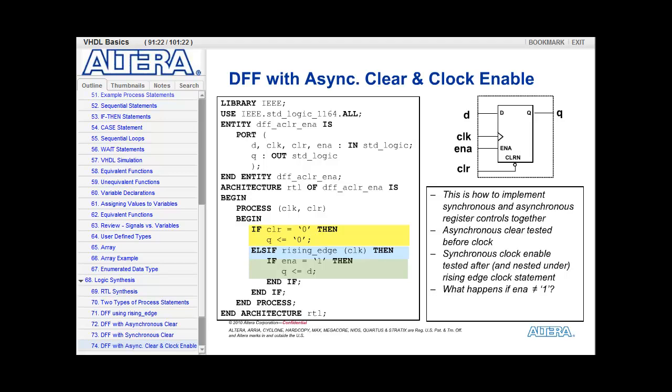So let's combine these two concepts together. Now we have a D flip-flop with an asynchronous clear and a clock enable. Since the clear again is asynchronous, it goes in the sensitivity list, and we check for it before the rising edge. Since the clock enable is a synchronous control, it does not go in the sensitivity list, and we nest it underneath, or we test it underneath the rising edge of the clock.